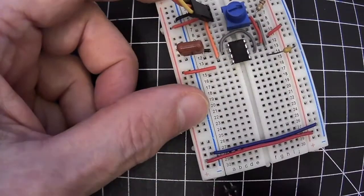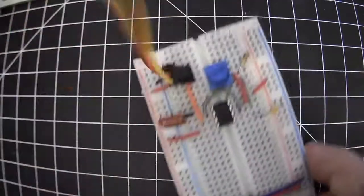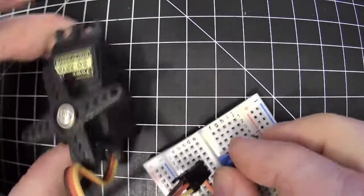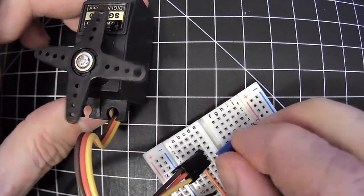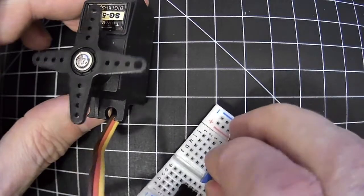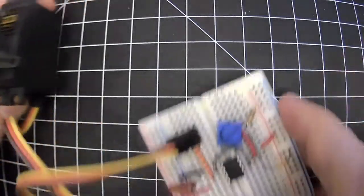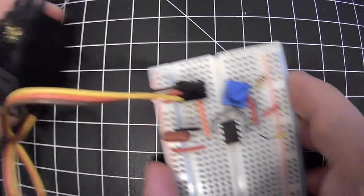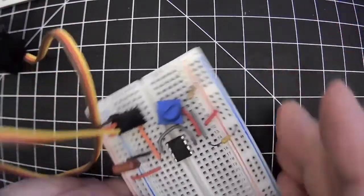So now let's see what happens. I apply power. So I can twist this pot and control the position of the motor, but I think I have something in mind that might be a little more fun.